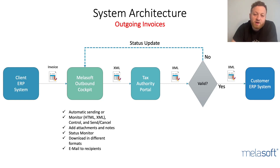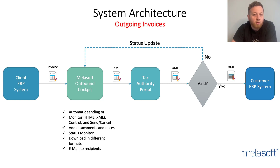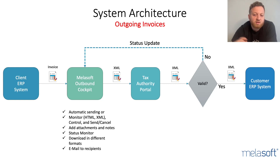Here is the general system architecture for outgoing invoices. On the left, the invoice is created in the ERP system, mapped, and the XML file is created by the Malasoft add-on. The created invoice can be managed using the outbound cockpit. The documents can be viewed in different formats including HTML and XML, and the invoices can be sent to the government portal automatically or manually, depending on your request. Once the XML file is validated, it is sent to the customer, and the status of the document can be monitored throughout all stages within the Malasoft cockpit.